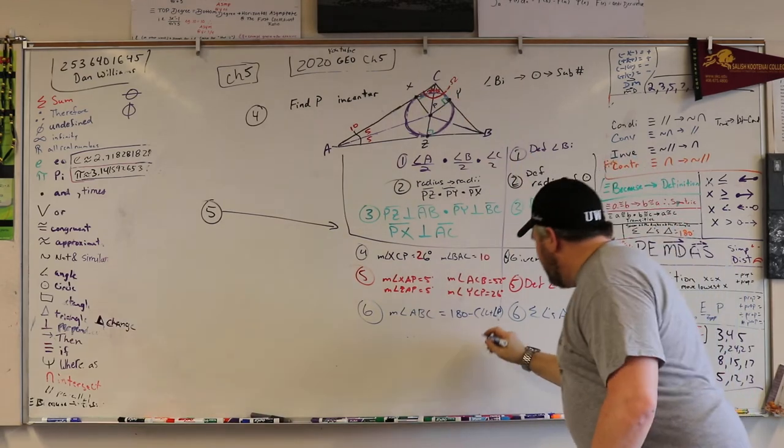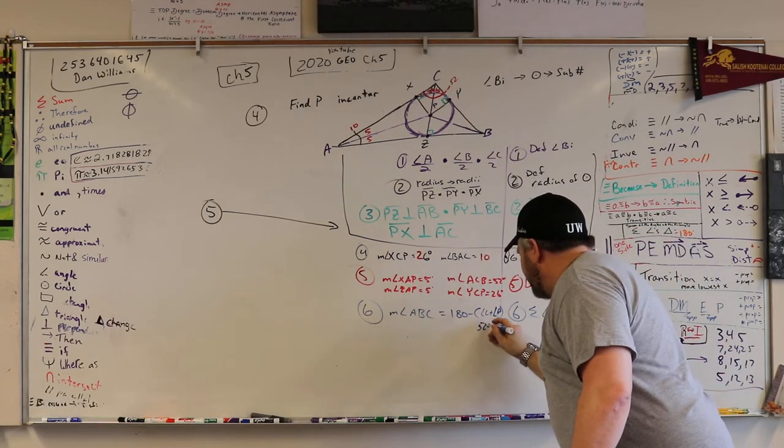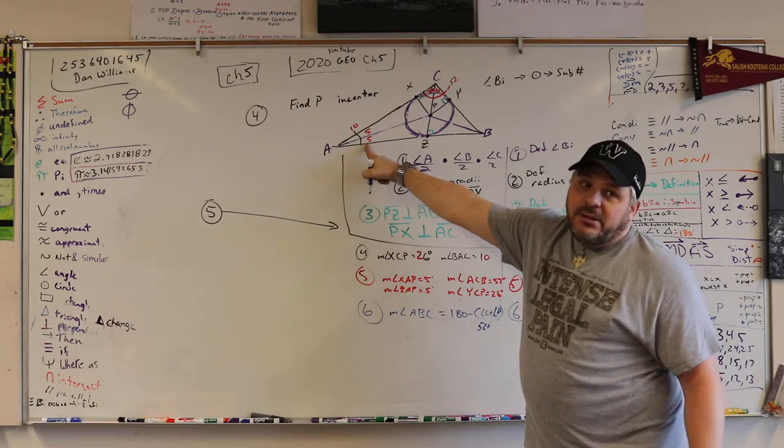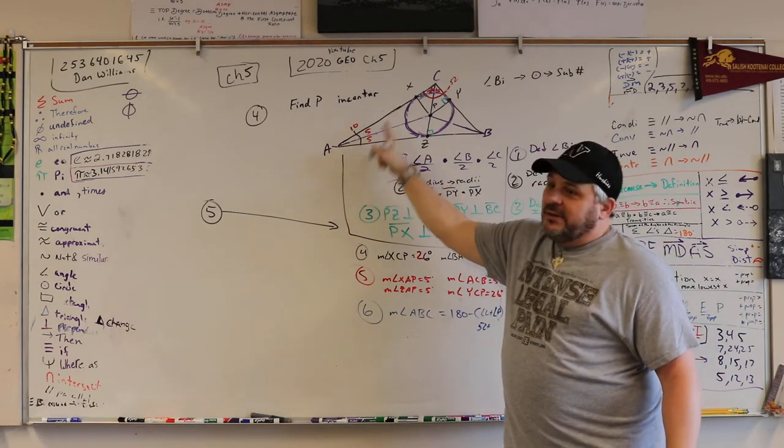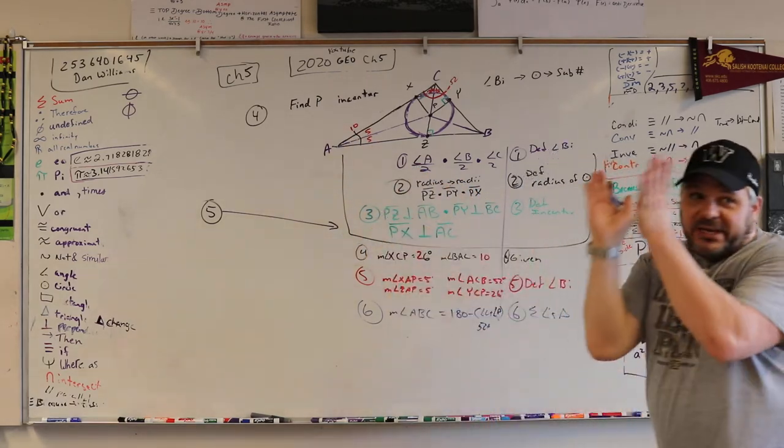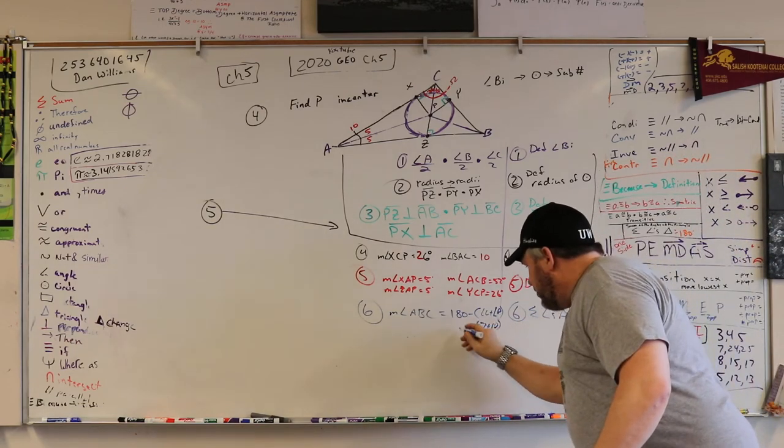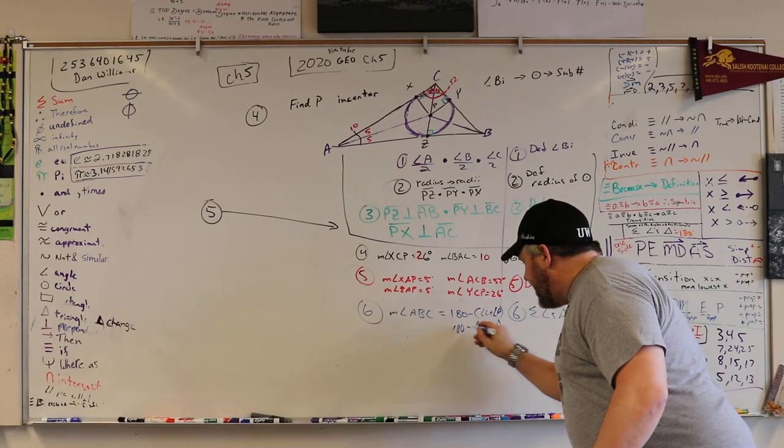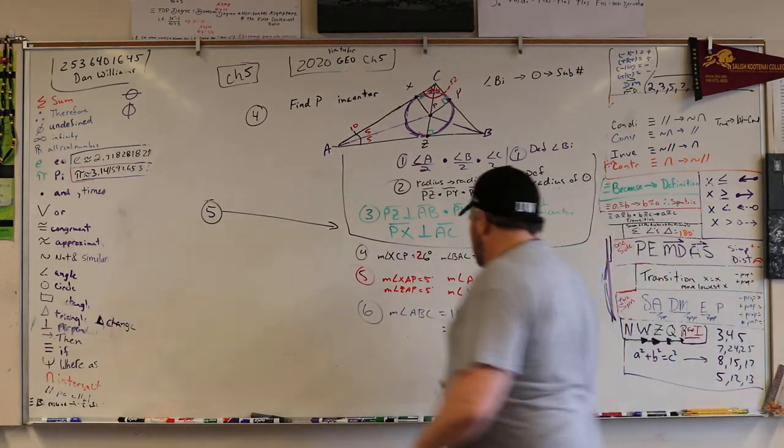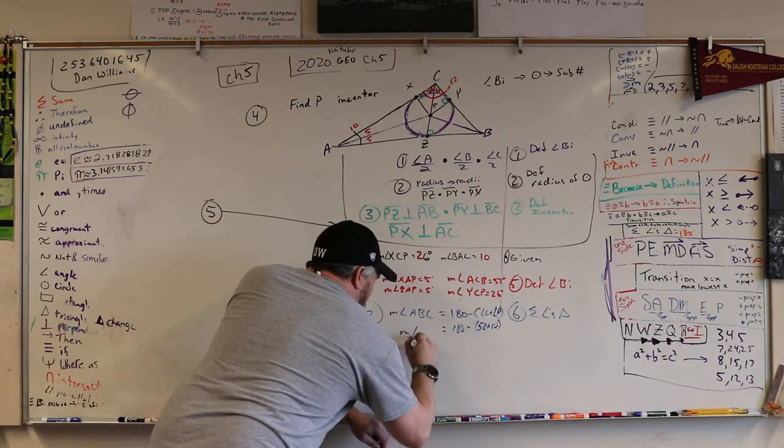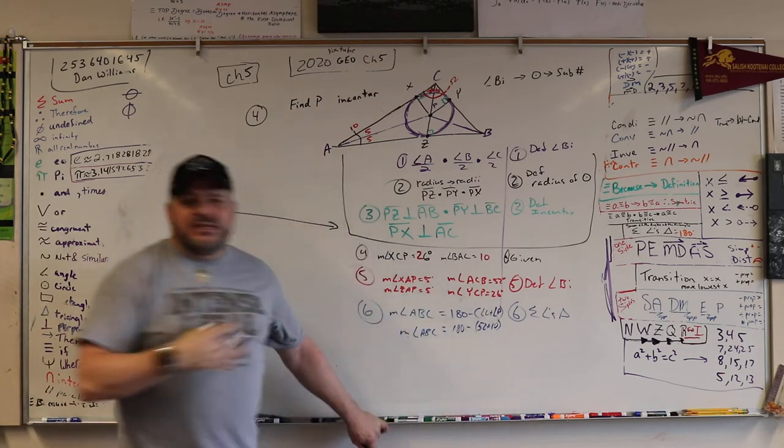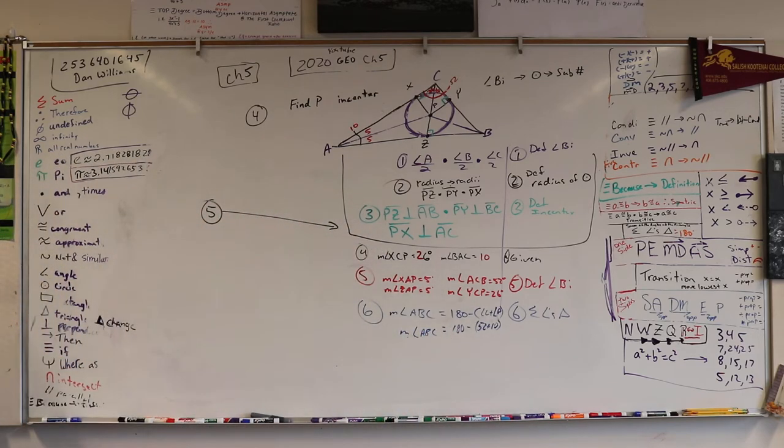52. So we got 52 plus what? What's this one? 5. No, no, no, not 5. 10. Remember the big angle? 10. And 180 minus that should equal the measure of angle ABC or CBA or angle B. I'm okay if you call it angle B.